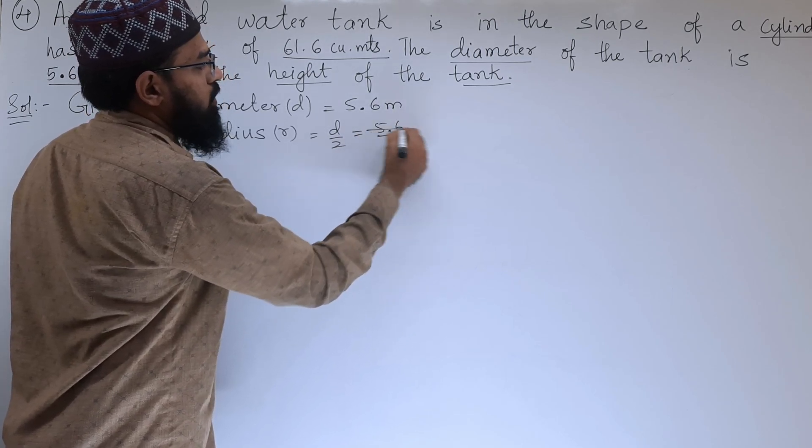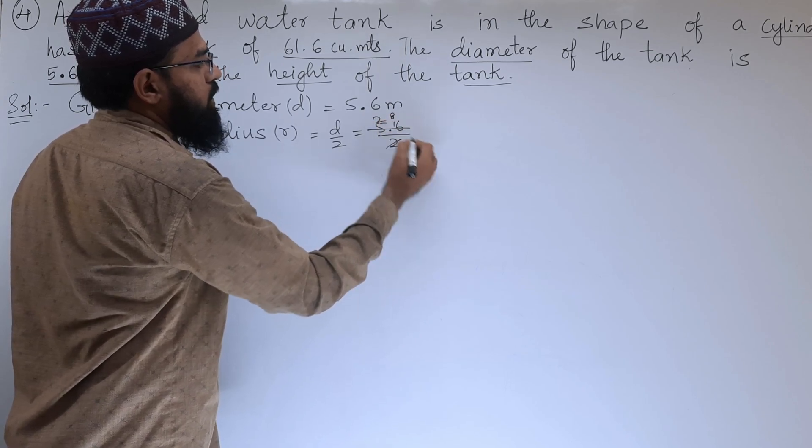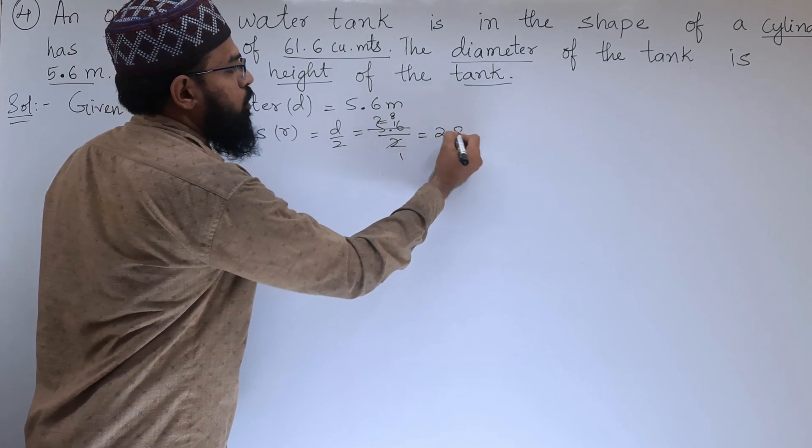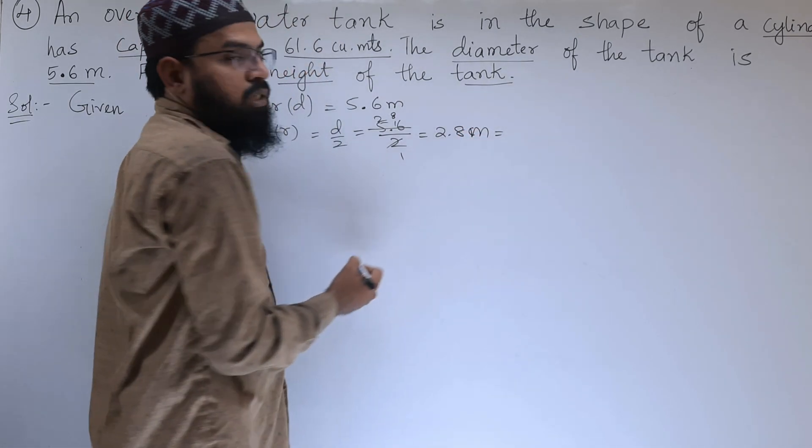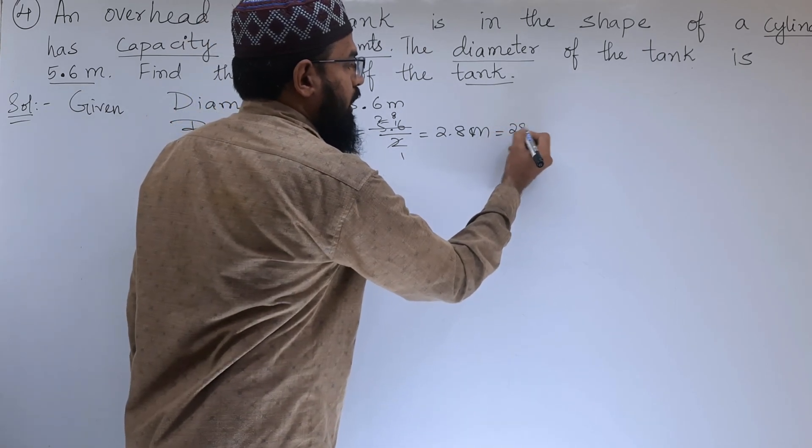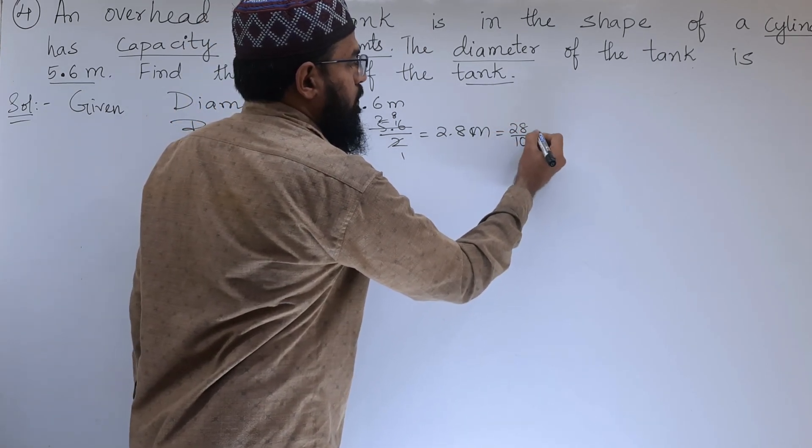Calculating: 2 times 2 is 4, 2 times 8 is 16, so it is 2.8 meters. We can write this 2.8 as 28 by 10 meters.